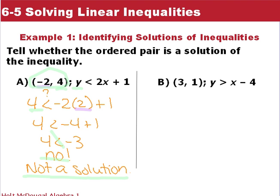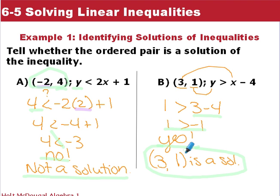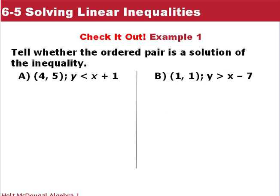In the second example, we're given the ordered pair (3, 1), so we put 3 in for x and 1 in for y. We get 1 is greater than 3 minus 4. Simplifying, 1 is greater than negative 1 — and that is true. So the ordered pair (3, 1) is a solution. Now it's your turn — you have two inequalities; see if those ordered pairs are solutions.